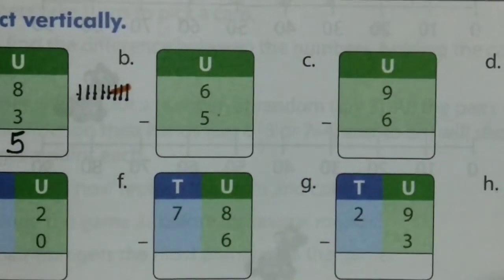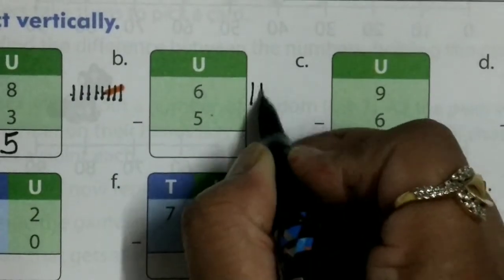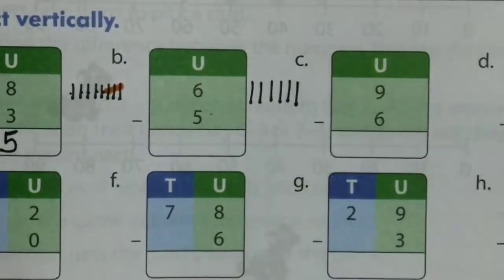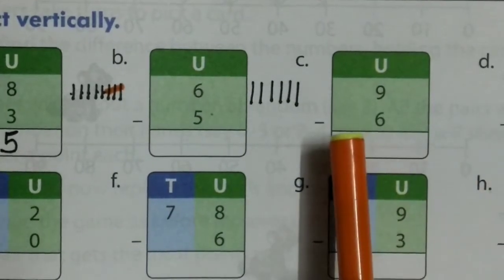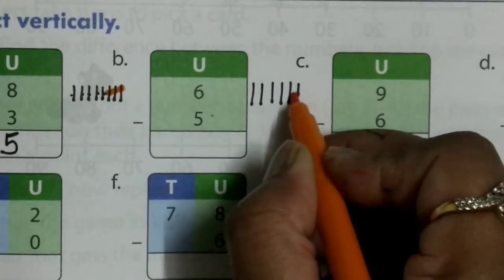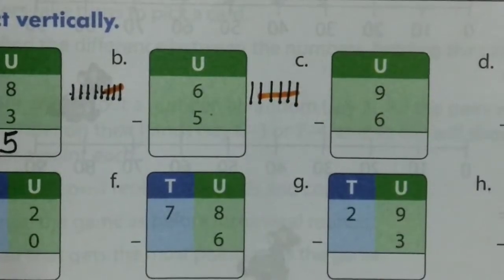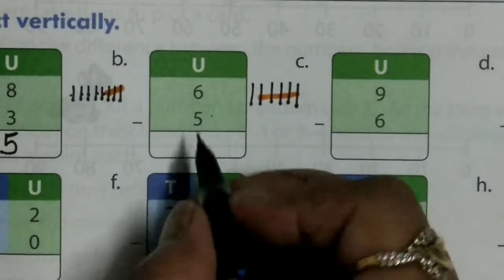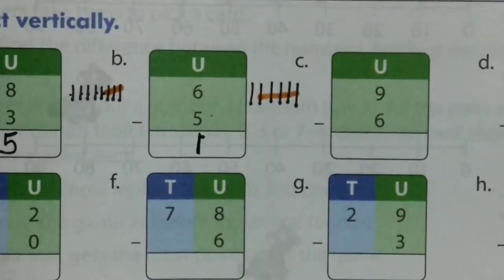6 minus 5: draw 6 lines — 1, 2, 3, 4, 5, 6. Remove 5 lines: 1, 2, 3, 4, 5. How many lines are remaining? Only 1. So 6 minus 5 equals 1.